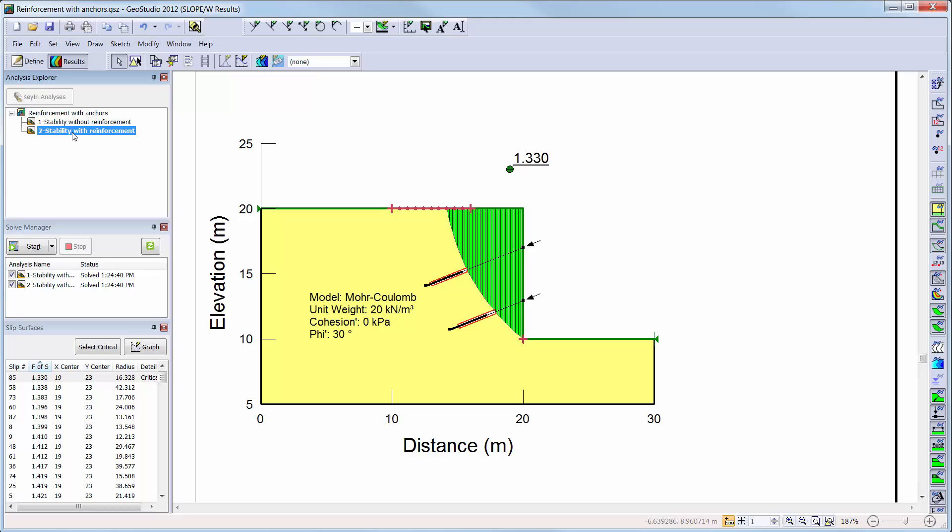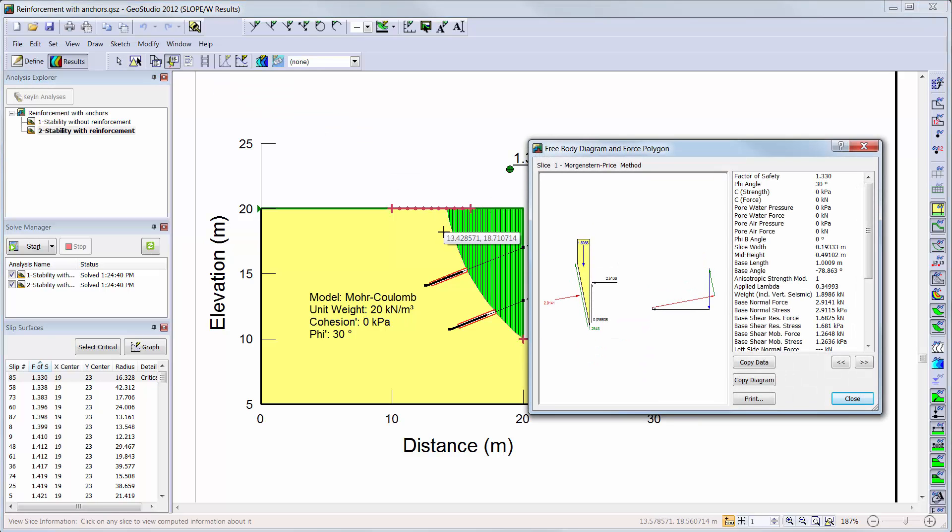We can use the slice information button to view the free body diagram and force polygon for each of the slices for the chosen slip surface. Remember, the factored pullout resistance per length of grouted section was calculated to be 100 kN per m per m of grouted section. If we multiply this value by the 3 m grouted section, this indicates that the pullout force should be 300 kN concentrated at the base of the slices.